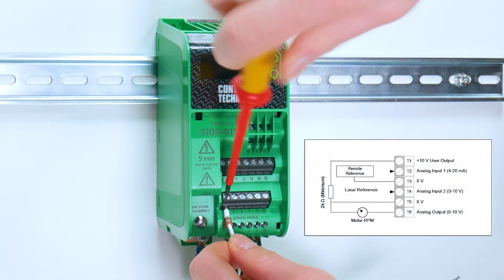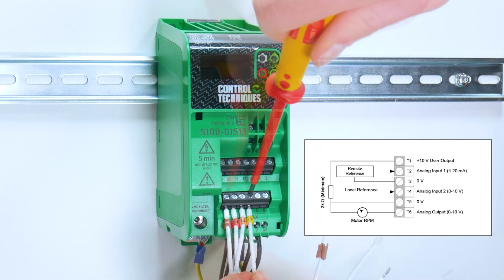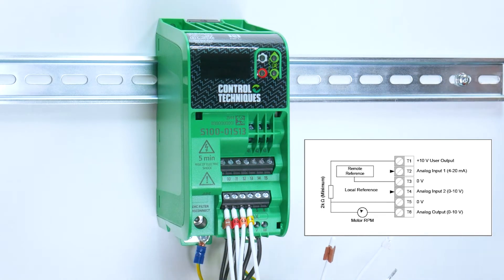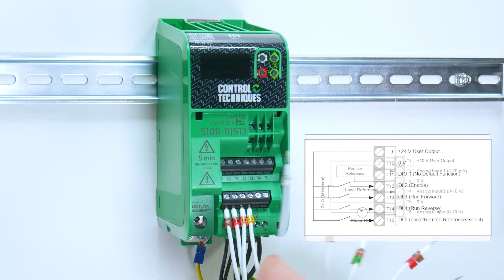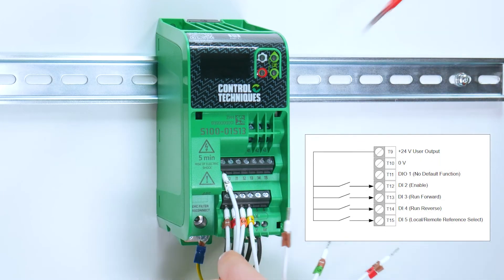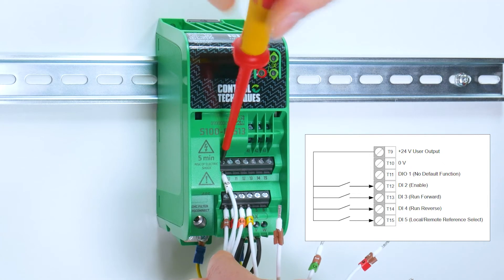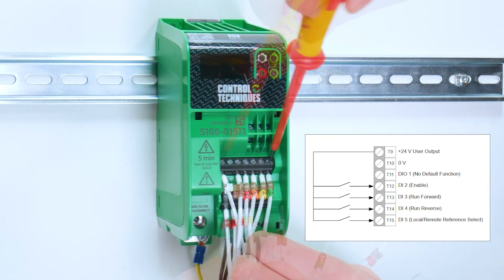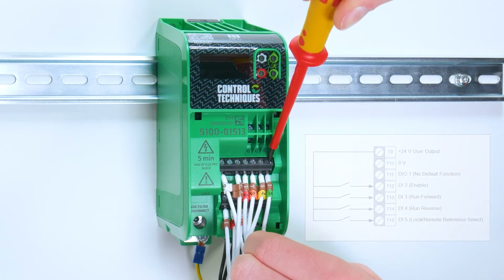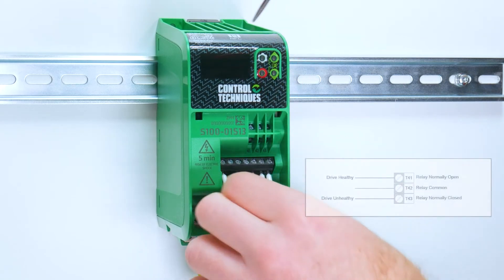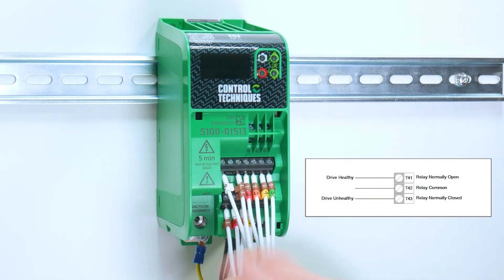Start by connecting your analog inputs and analog output to the first row, then move to the second row which are for your digital inputs and your digital output, and then the top row for the relay connections.